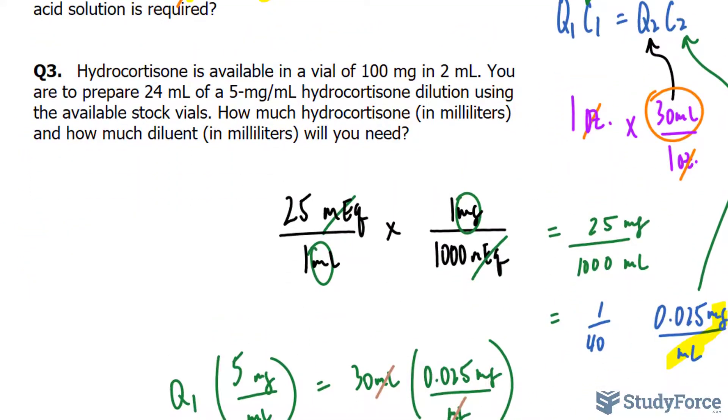In question number 3, hydrocortisone is available in a vial of 100 milligrams in 2 milliliters. You are to prepare 24 milliliters of a 5 milligram per milliliter hydrocortisone dilution using the available stock vials. How much hydrocortisone in milliliters and how much diluent in milliliters will you need?